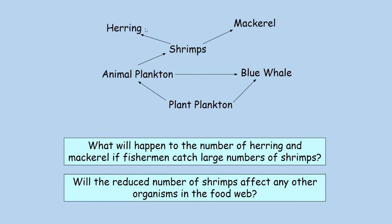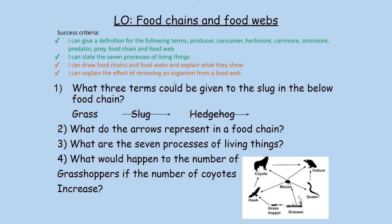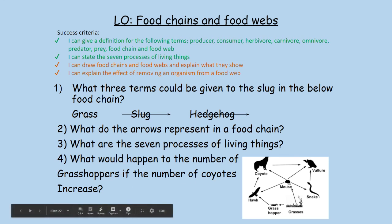It's very unlikely that herrings and mackerel only eat shrimp, so as a zoologist you'd be puzzled if reducing shrimp didn't reduce herrings and mackerel — meaning you haven't fully understood the ecosystem. Looking at a food chain example: the slug is a primary consumer, a herbivore, and is prey — it's not a predator because it doesn't hunt the grass. What happens to grasshopper numbers if coyote numbers increase? More coyotes mean fewer hawks, so grasshopper numbers would probably increase.